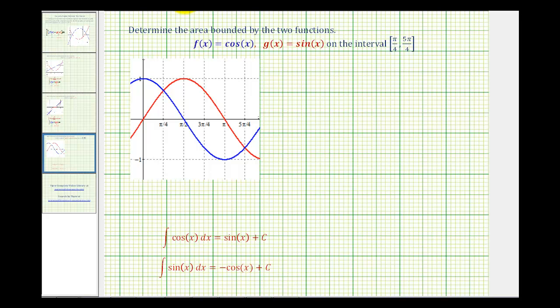We want to determine the area bounded by f of x equals cosine x and g of x equals sine x on the closed interval from pi over four to five pi over four.